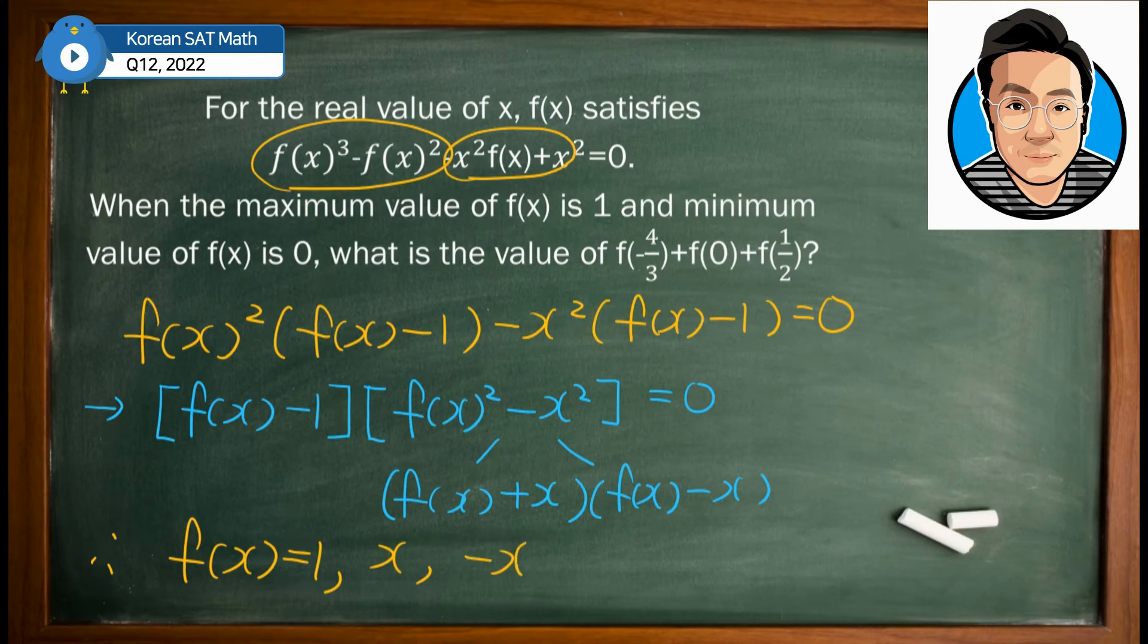We have the specific value of f(x), which is 1, and the other two have to be just functions. One of them is x that goes straight up and negative x that goes down.